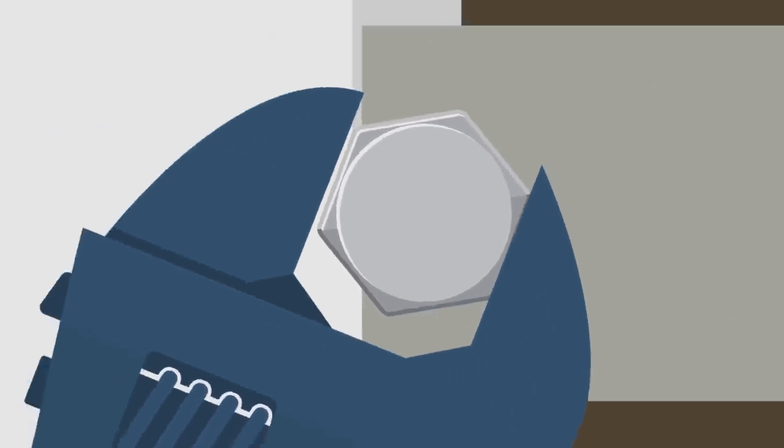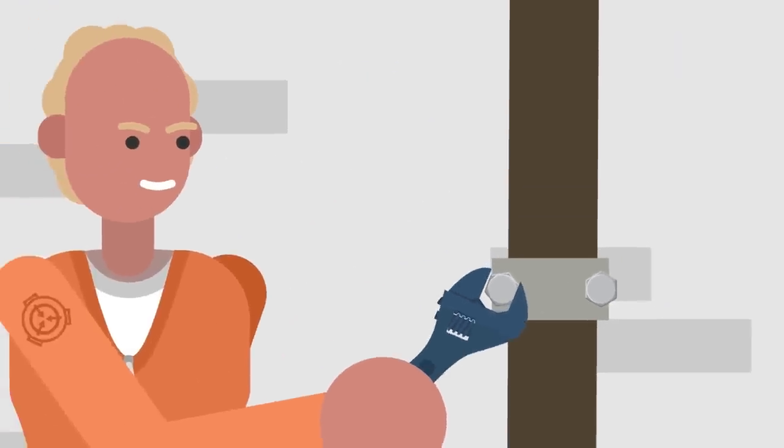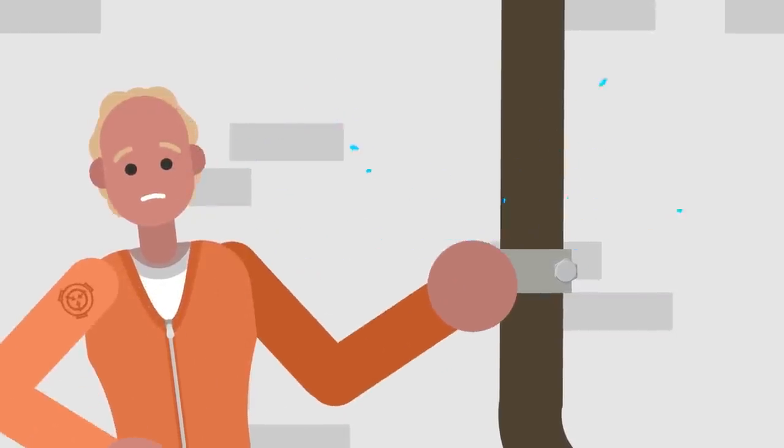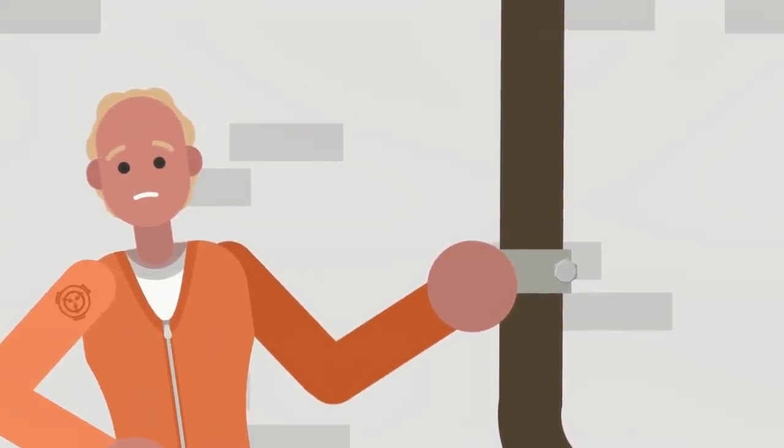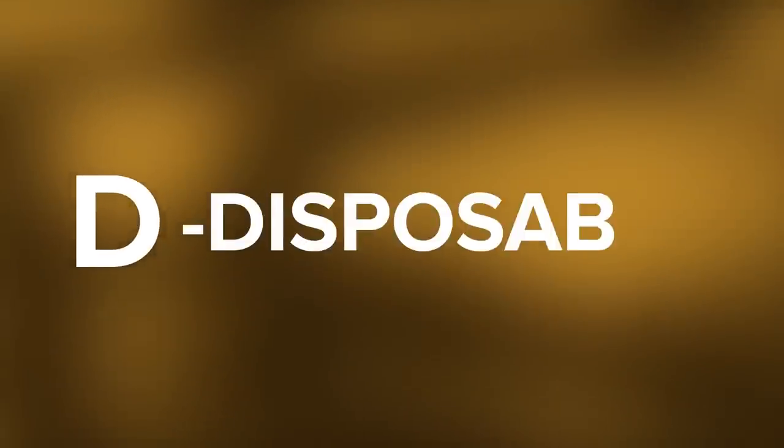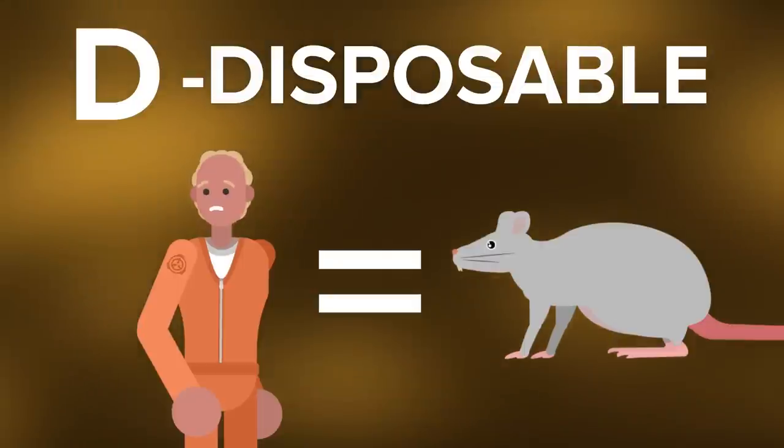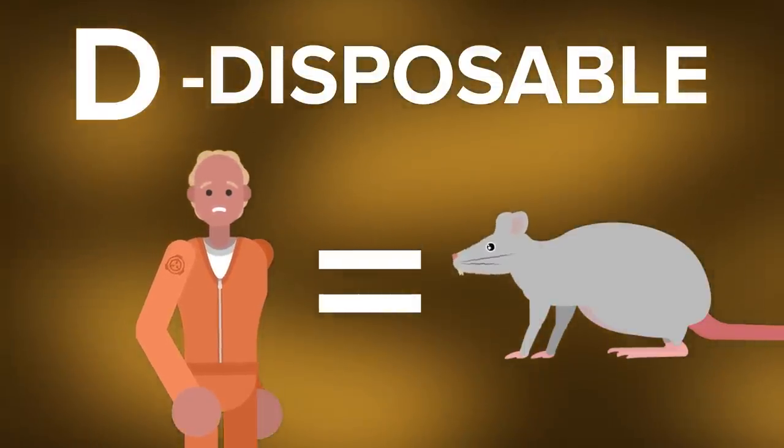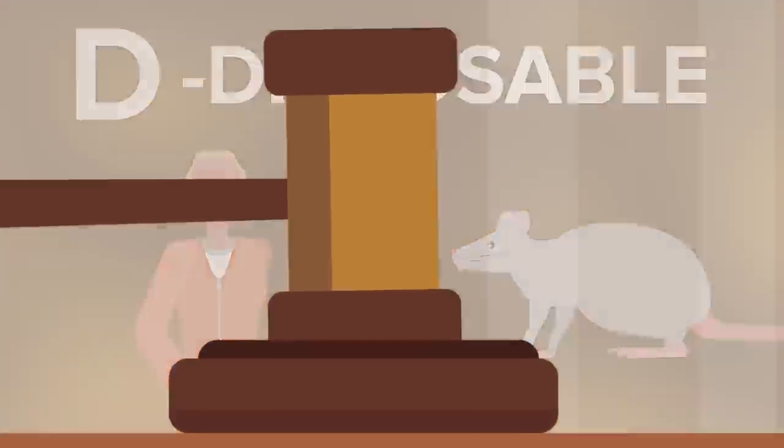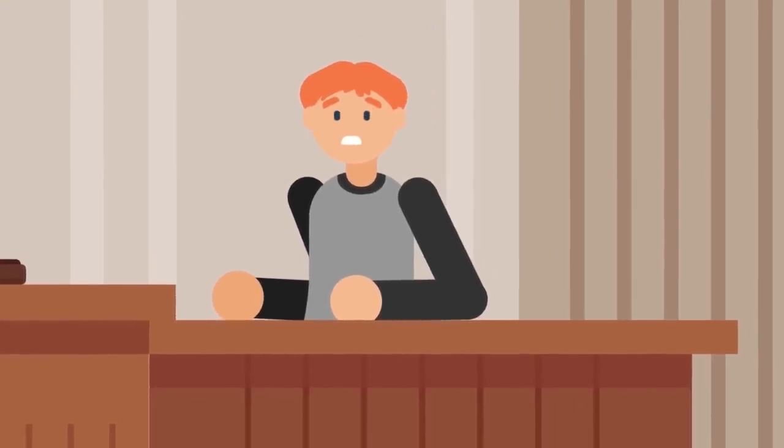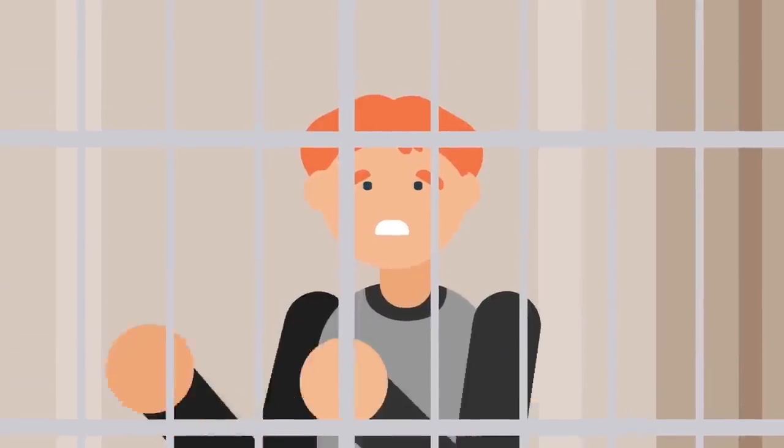D-Class personnel are the cogs that keep the machinery of the SCP Foundation running smoothly. Unfortunately, things are rarely very smooth for the personnel themselves. There's a reason that common knowledge basically states that D stands for disposable.